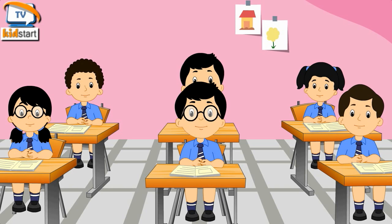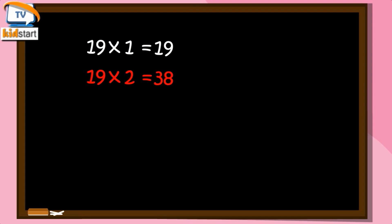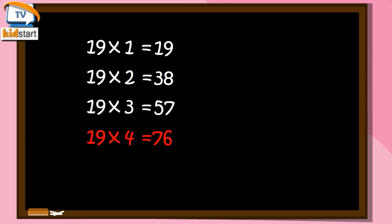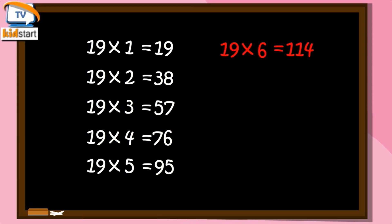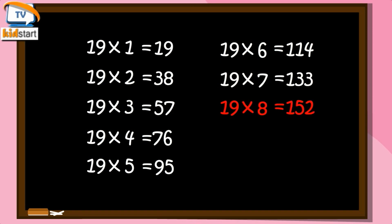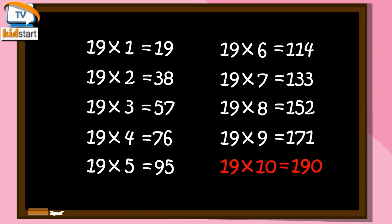Nineteen ones are nineteen. Nineteen twos are thirty-eight. Nineteen threes are fifty-seven. Nineteen fours are seventy-six. Nineteen fives are ninety-five. Nineteen sixes are one hundred and fourteen. Nineteen sevens are one hundred and thirty-three. Nineteen eights are one hundred and fifty-two. Nineteen nines are one hundred and seventy-one. Nineteen tens are one hundred and ninety.